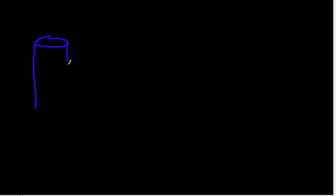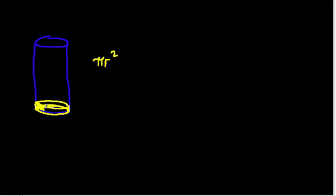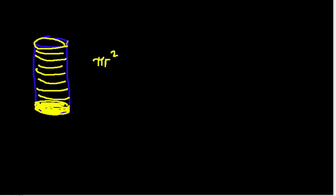This problem came about because we were studying the volume of a cylinder in class. One way to think about it is to consider the area of a circle on the bottom — that's π r squared. If you had a circle with a height of one unit on the bottom, you can think of that as one layer of the cylinder. To find the total volume, you're finding how many layers fill the cylinder, which means you multiply the area of one circle by the total height.